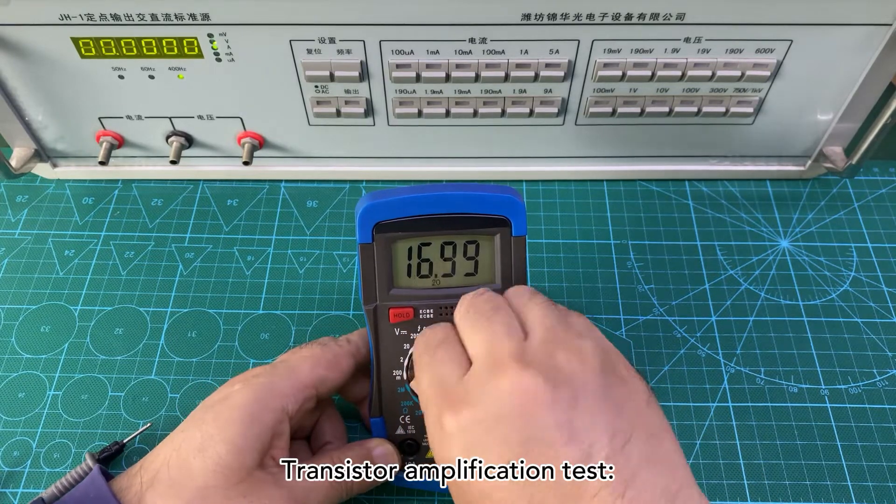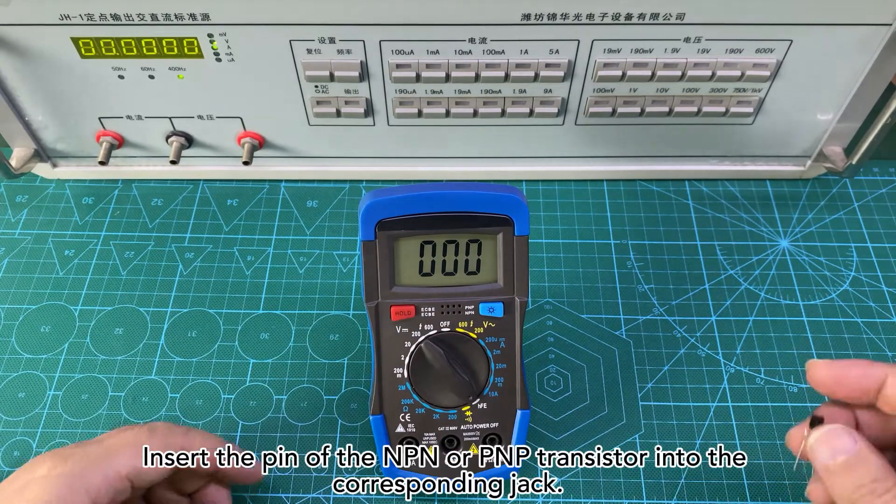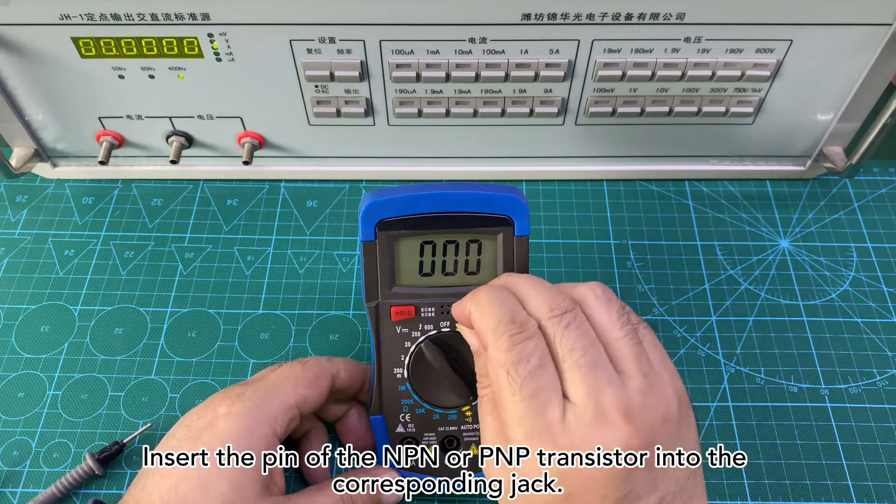Transistor amplification test. Turn the function selector switch to the F position. Insert the pin of the NPN or PNP transistor into the corresponding jack.